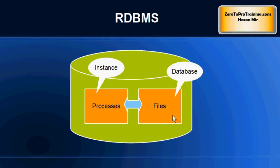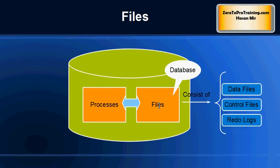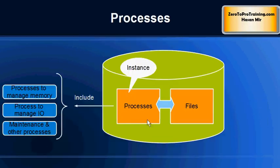These processes are running in the memory of the server, while the files are stored on the hard disk. So if you turn off your server the processes will be gone, but the files will remain on the disk. The database files consist of data files holding the actual data, control files, and redo log files — these are the three different types of files under the files component.